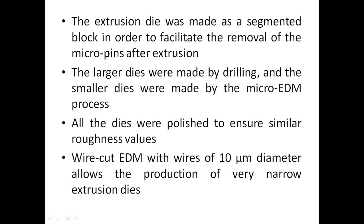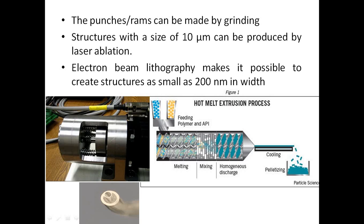The extrusion die was made as a segmented block to facilitate removal of micro-pins after extrusion. Larger dies were made by drilling, and smaller dies by the micro-EDM process; all dies were polished to ensure similar roughness values. Wire-cut EDM with wires of 10 mm diameter allows production of very narrow extrusion dies. Punches and rams can be made by grinding, and structures of 10 mm size can be produced by laser ablation. Electron beam lithography makes it possible to create structures as small as 200 nm in width.